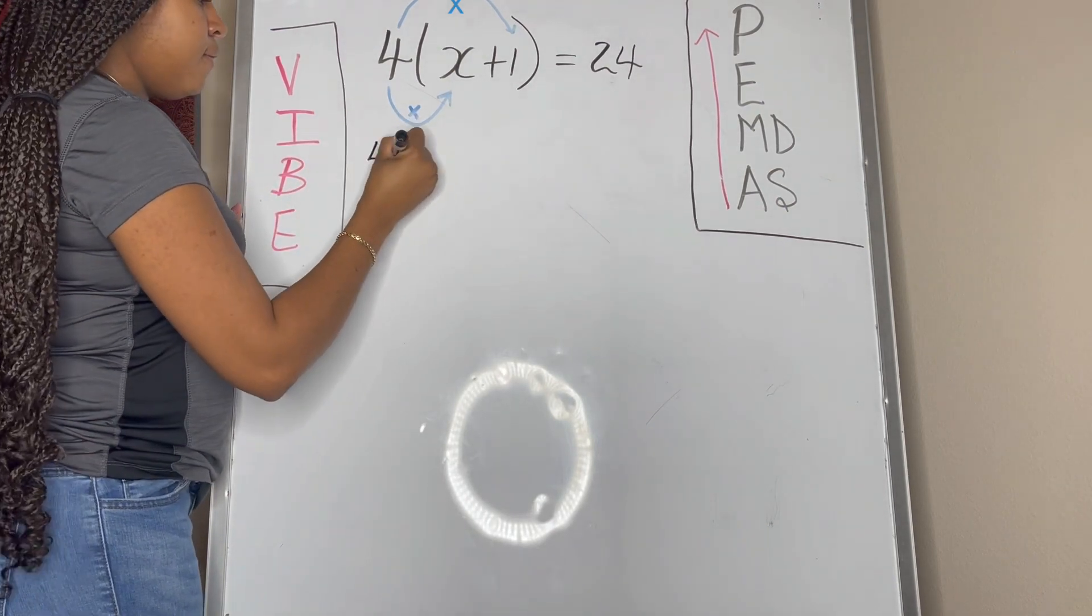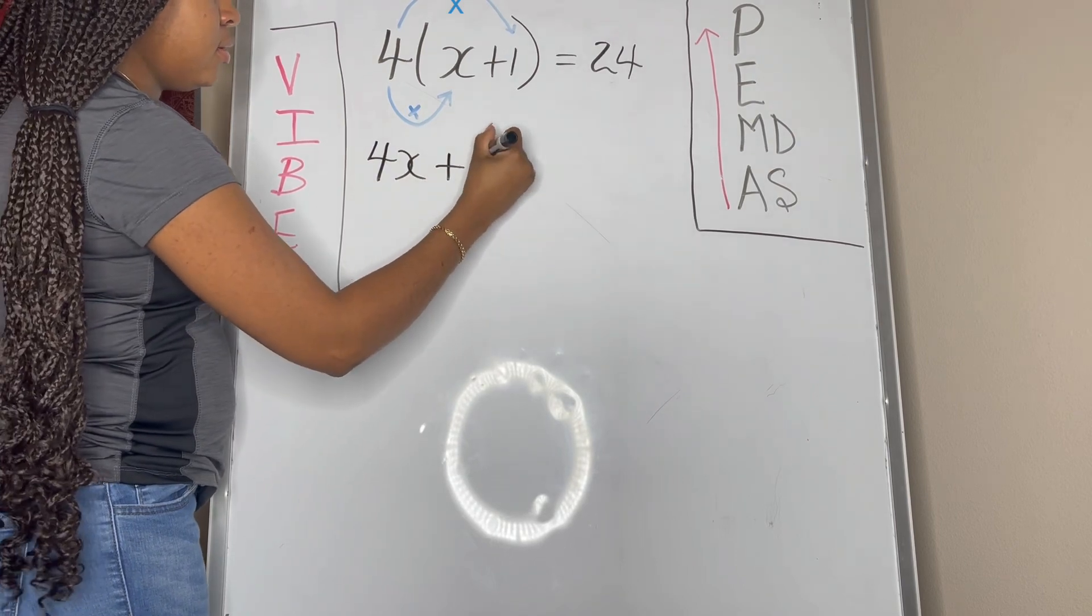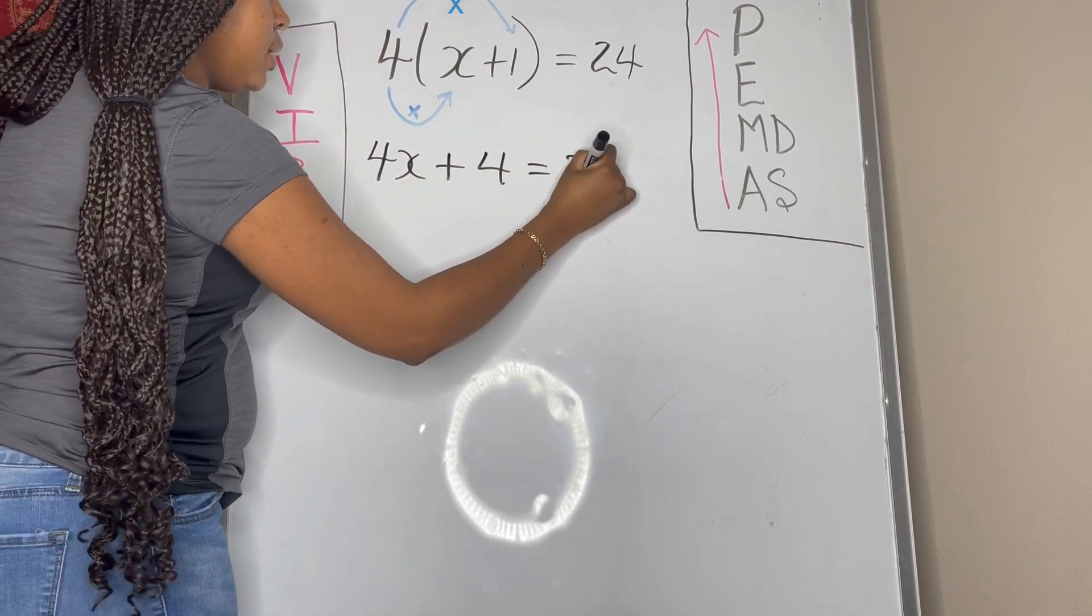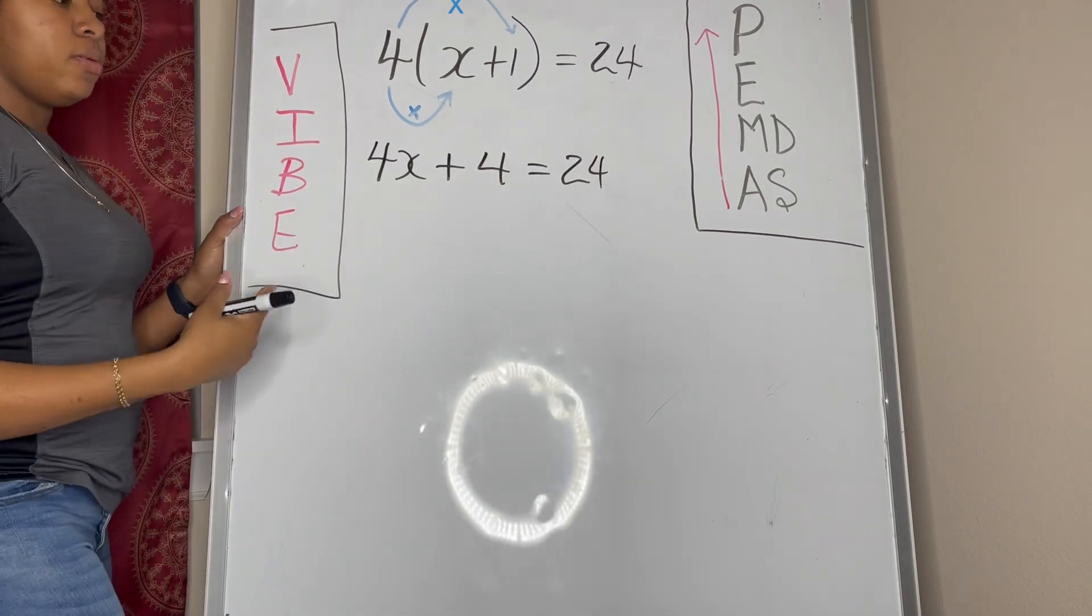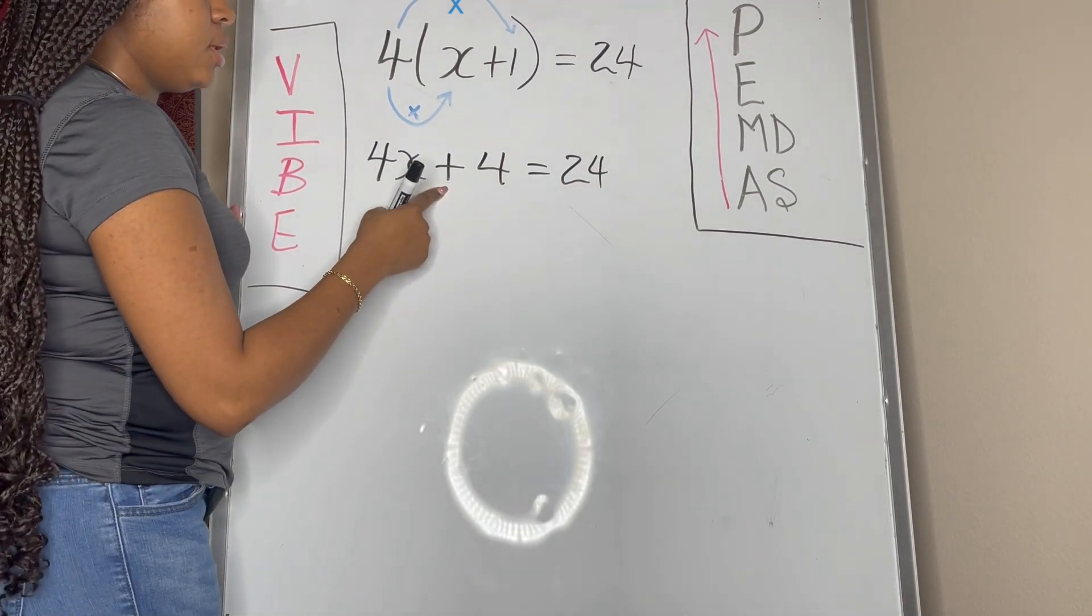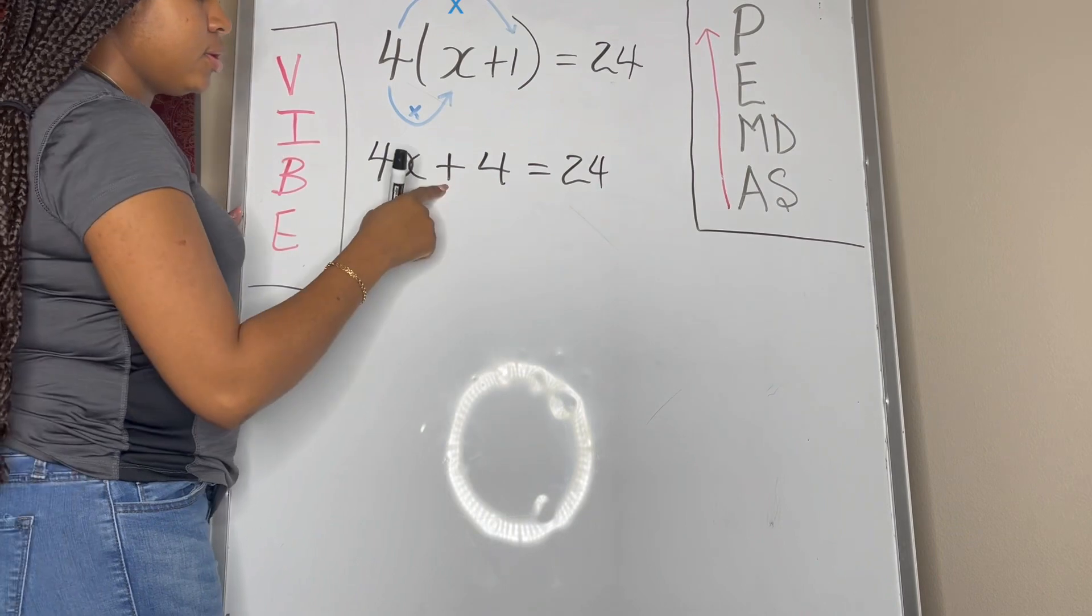Now if we go ahead and perform that operation, we end up with 4x plus 4 is equal to 24, and we follow the rest of our order of operations from here.